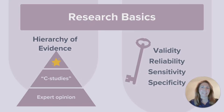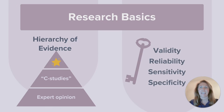Let's start with the research basics — things like understanding the hierarchy of evidence and study designs. Think of this as the pyramid of research power. At the top, we've got the gold standard studies, like meta-analysis. In the middle, we have what we like to call the C-studies: cohort, case control, or cross-sectional. And at the bottom, we have things like expert opinion. Those are not as strong, but still worth understanding.